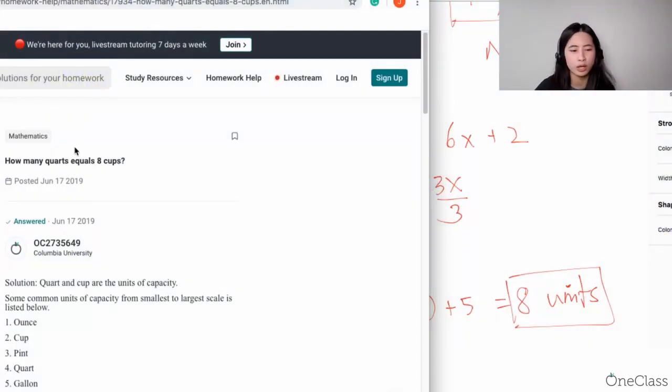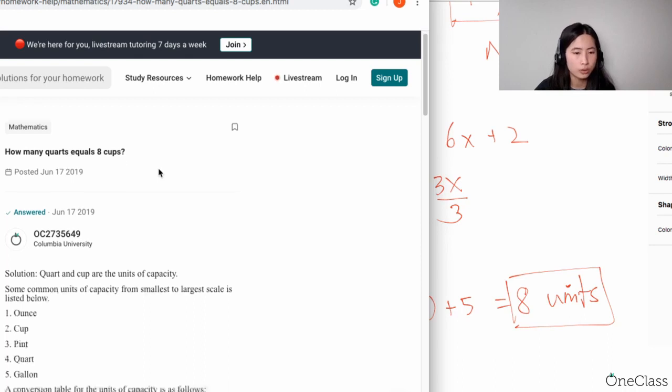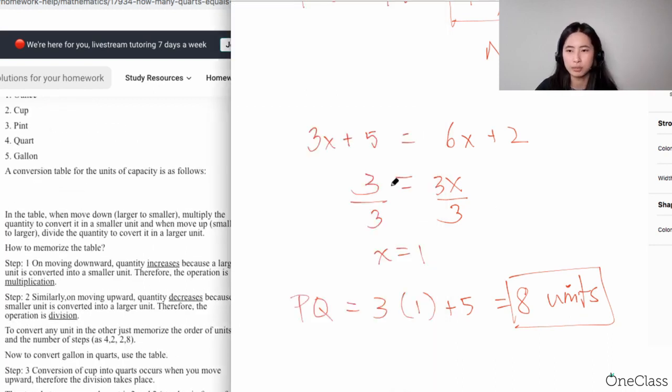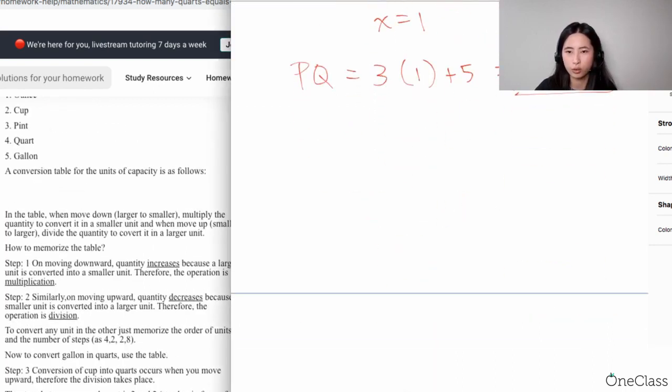Let's run through this. How many quarts equals eight cups? So one cup is actually a quarter for your quarts. Okay, if you have one cup, by the way this is just the standard unit of measurement, right?